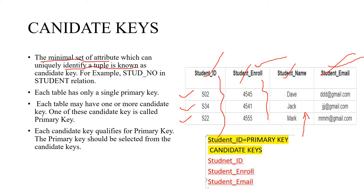Each table has only a single primary key. But each table can have one or more candidate keys. Out of these candidate keys, we choose one as the primary key. Each candidate key qualifies for primary key, but there is only one primary key for a relation — that key should be selected from the candidate keys. So only one candidate key can be the primary key. In the next class, we will learn the properties of candidate keys and the difference between primary key and candidate keys.